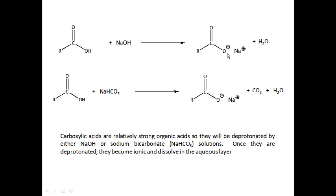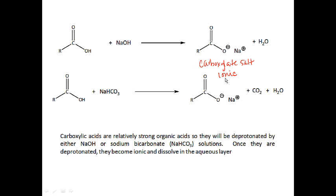When you deprotonate a carboxylic acid, you make what's called a carboxylate salt, which is simply a deprotonated carboxylic acid. The key point is that if you have a carboxylic acid that is insoluble or only partially soluble in water, after deprotonation you make an ionic substance that is soluble in water. So when we do an extraction with a base, we're converting the carboxylic acid to an ionic substance and extracting it out of the organic layer into the aqueous layer.